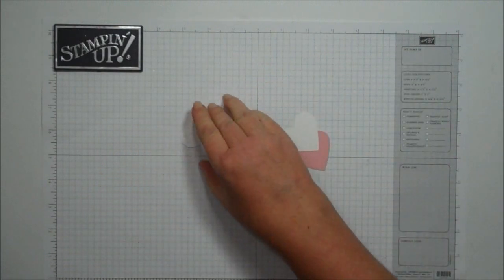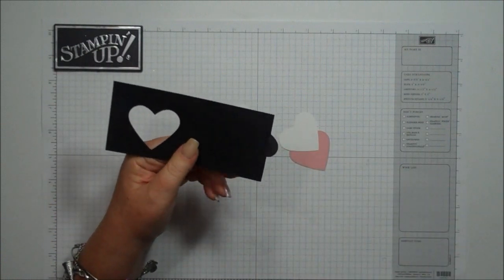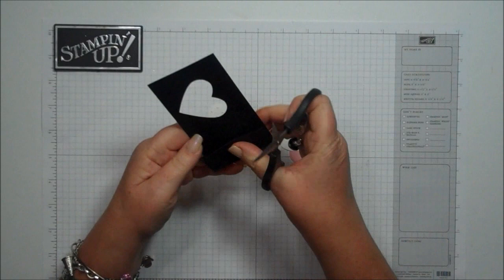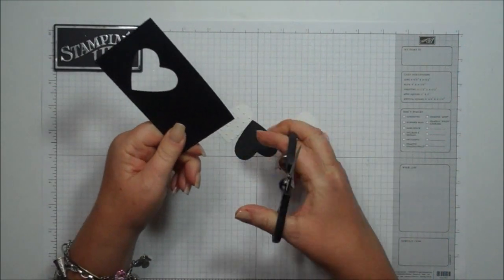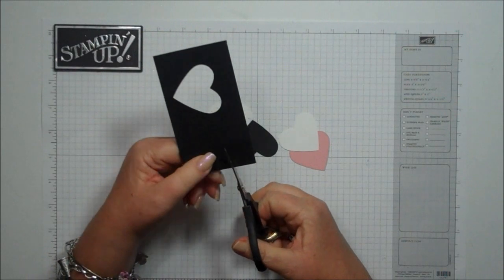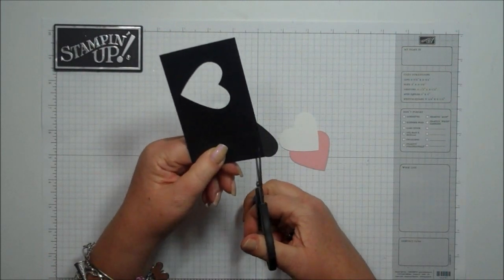Now to make the bow tie on your groom's heart, you're going to take your black and make a score line. So you're going to fold your score line and then cut a triangle. Now I'm going to cut a small one, but then I'll cut a larger one so you'll see the shape that you're wanting to do.